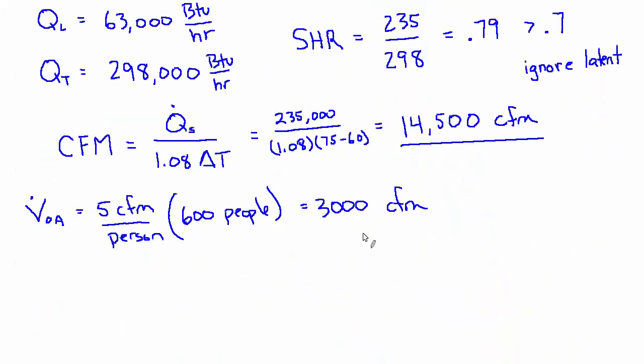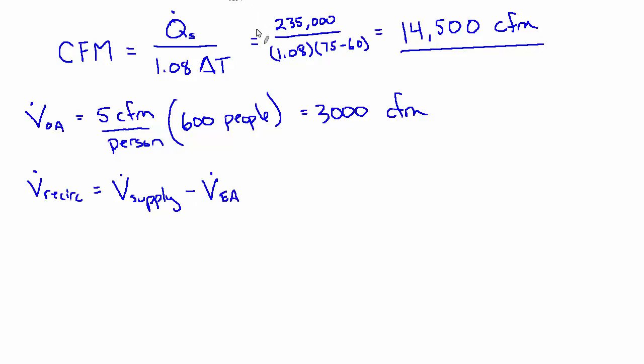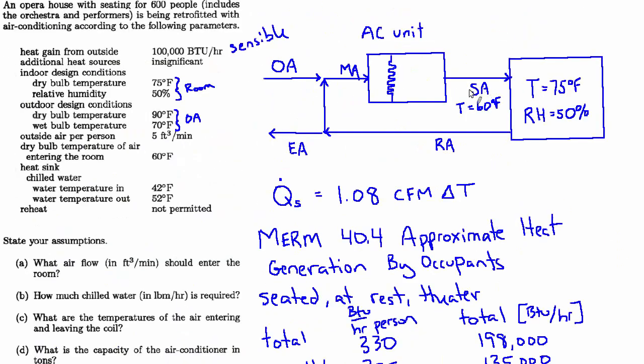So that's going to be 11,500, but let's write it out. So the volume of the recirc is the total volume of supply minus the volume of the exhaust air. And these are not special formulas that you need to worry about memorizing.